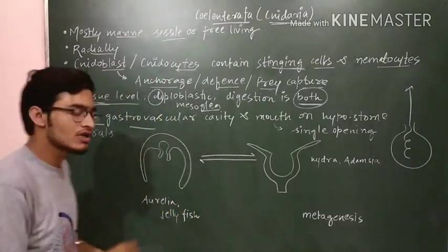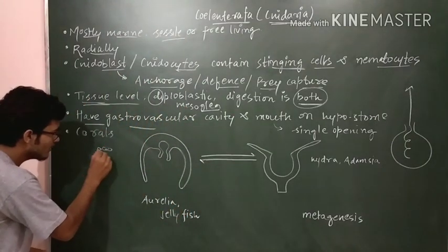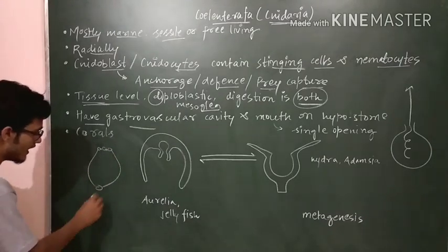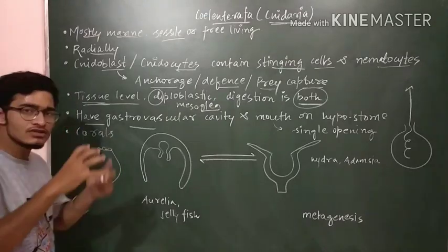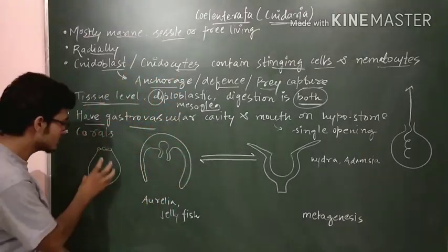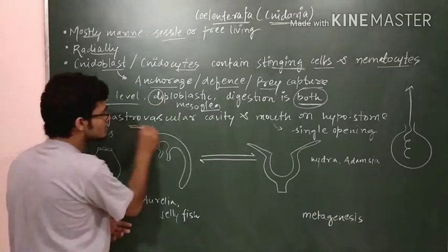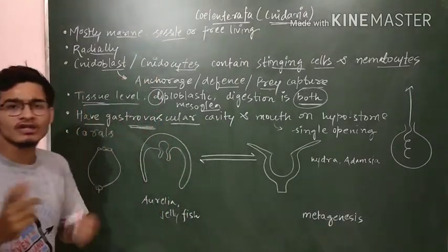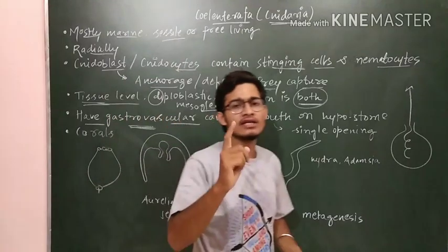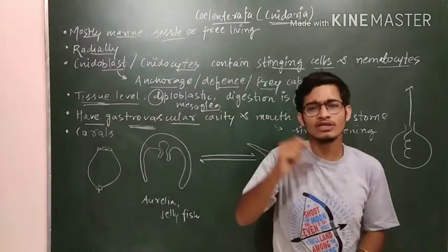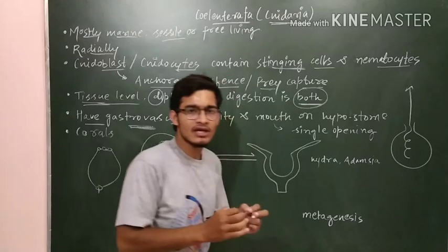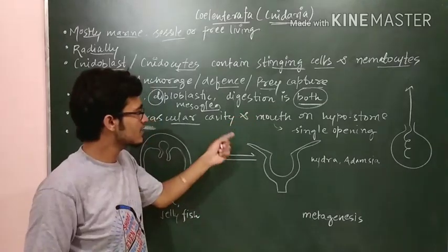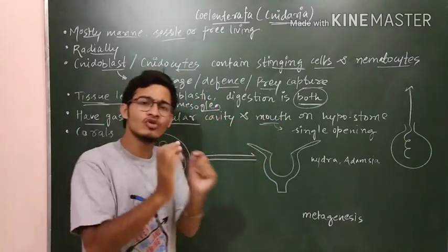In the last video we discussed the water canal system of Porifera with ostia, the spongocoel body cavity, and osculum. Similarly, Coelenterata has a body cavity called the gastrovascular cavity. There is a single opening which serves as the mouth, so the alimentary canal is incomplete. In a complete alimentary canal there are two openings - a mouth and an anus - but here a single opening performs both functions.